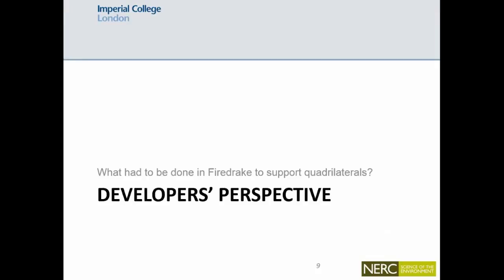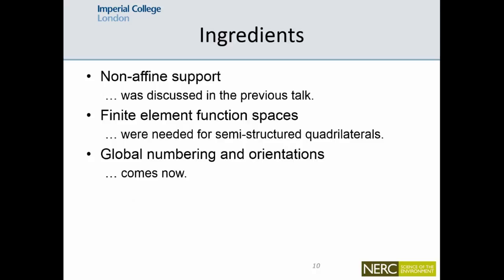So what had to be done in FireDrake to have support for quadrilateral meshes? There are three main ingredients. One of them is the non-affine support, which Andrew has just discussed in detail. Then the finite element function spaces, which were already ready for extrusion. And they were discussed last year by Andrew, if I recall correctly. And there is the global numbering and orientation problem, which I will spend the rest of my talk on.